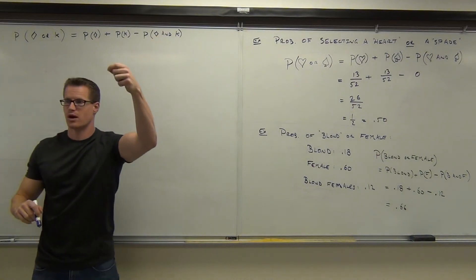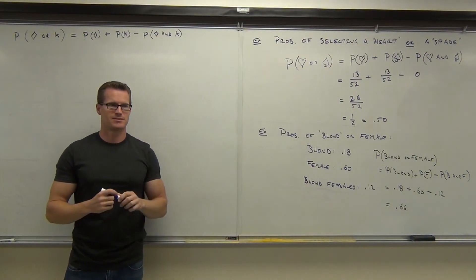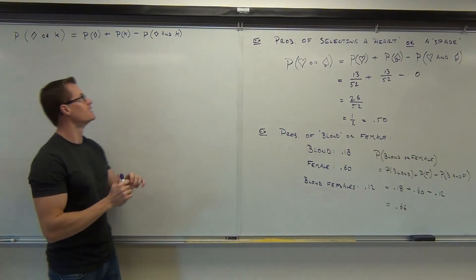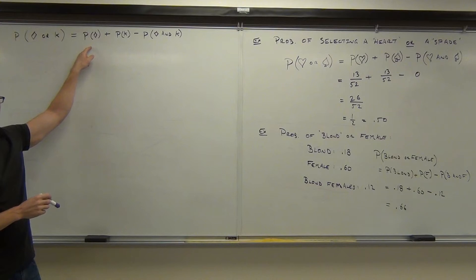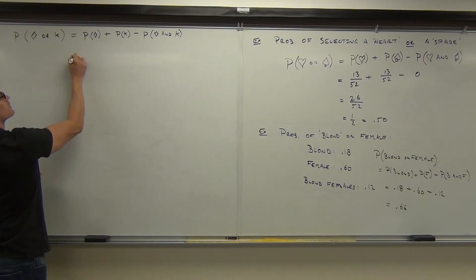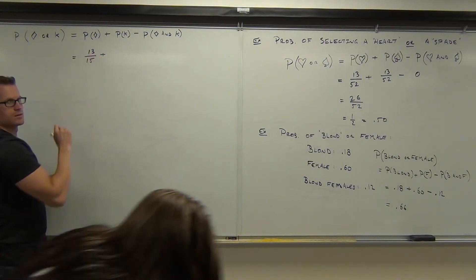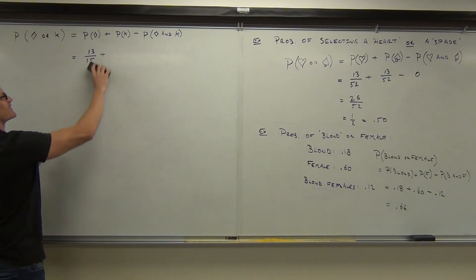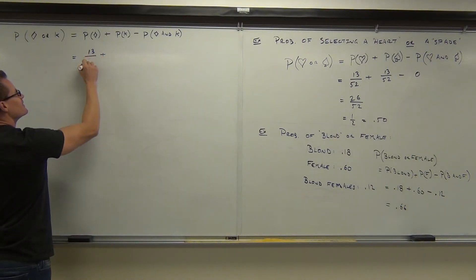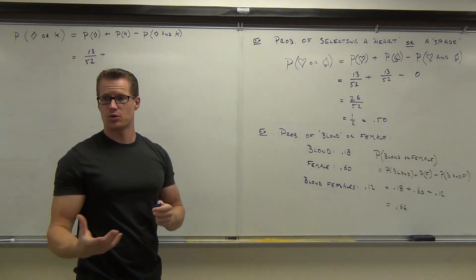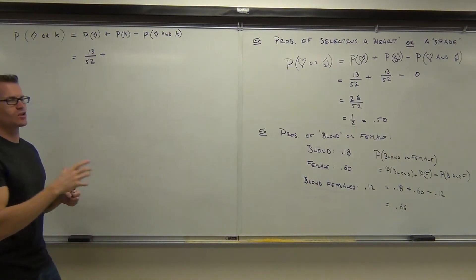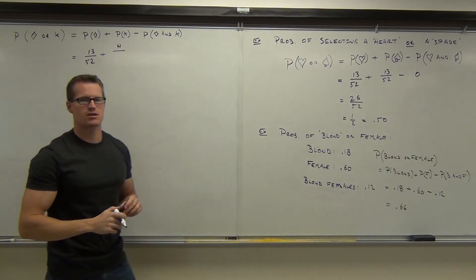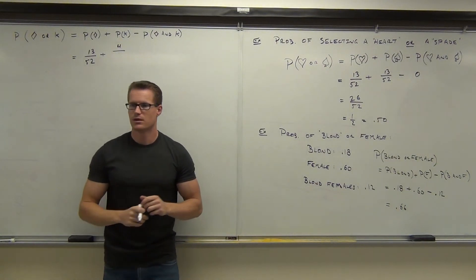Remember, "and" right here means during the same trial — one draw of the cards. What's the probability of selecting a diamond? Thirteen over fifty-two, because there are thirteen diamonds out of fifty-two total cards. Now let's look at the kings. How many kings are there in a deck of cards? Four. So the probability of selecting a king is four out of fifty-two. Please don't make the mistake of putting thirteen — there are still fifty-two cards. So fifty-two goes here as well.